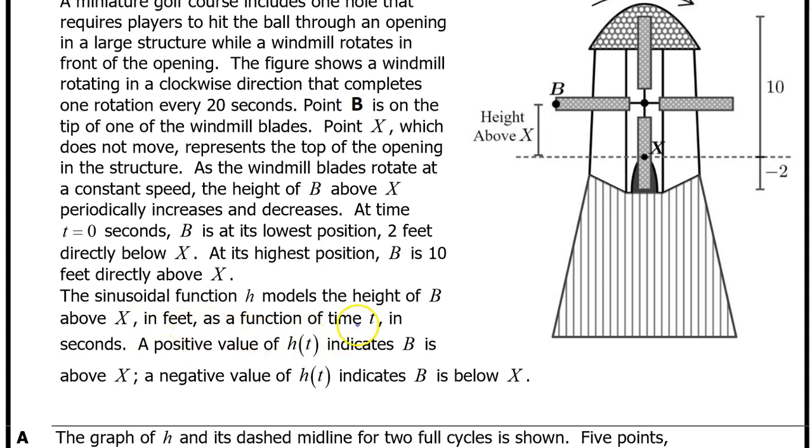The sinusoidal function h models the height of B above X in feet as a function of time t in seconds. A positive value of h(t) indicates B is above X; a negative value of h(t) indicates B is below X.